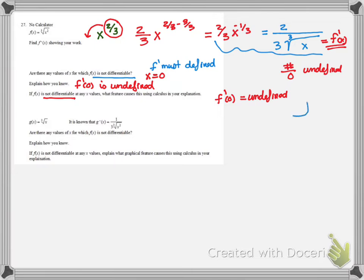we could have a vertical tangent where my f prime of x is undefined because I have a vertical tangent. Or I could have a cusp, which is another possibility.